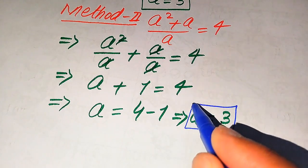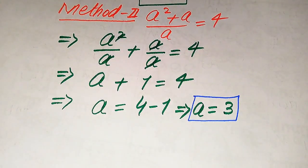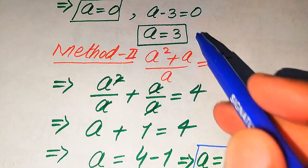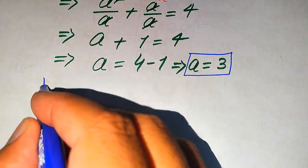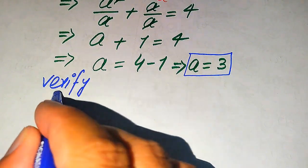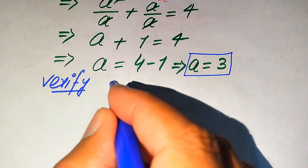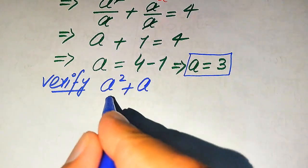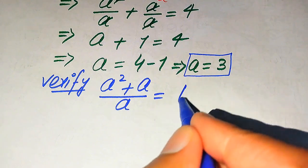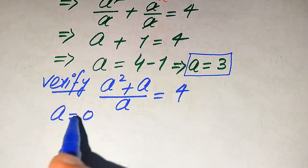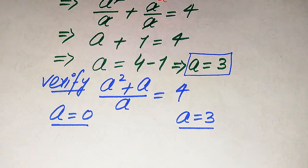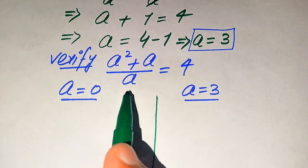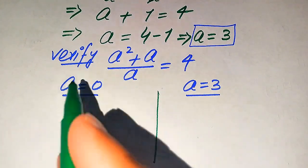In the second method we get only one value: a equals 3. So from the first method we got two roots — a equals 0 and a equals 3 — and from the second method only one root. Now it's time to verify these roots. We substitute into the original equation: a squared plus a divided by a equals 4.